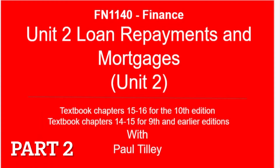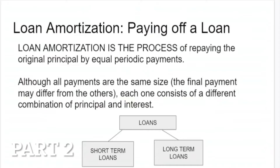I'll just do a little bit of a review here. When we talk about loans, we're normally talking about generally one of two types of loans. The first type would be what's considered a short-term loan, which is usually a loan that lasts about a year or maybe even five, but generally it's considered a pretty standard loan, such as a car loan, where the interest rate is fixed over a period of time and you make a standard payment on it, and eventually it will get paid off.